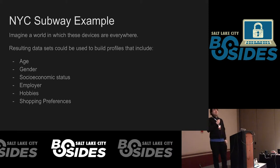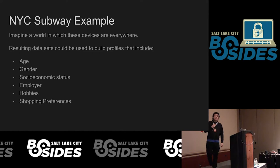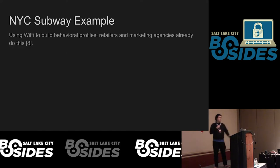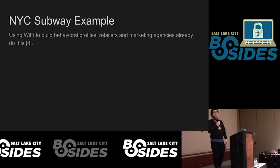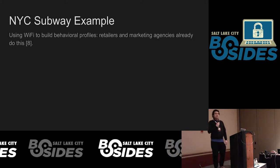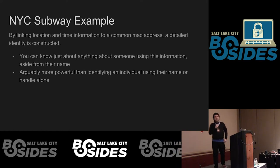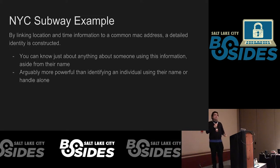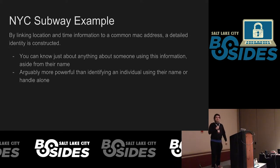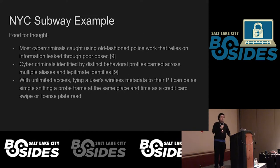Imagine a world where these devices are literally everywhere — not just the subway, but retail stores and just about everywhere. The resulting datasets could be used to build profiles that include age, gender, and socioeconomic status. You can tell a lot just by where someone goes. By linking location and time to a common MAC address, you can create a detailed identity — arguably more powerful than just knowing someone's name. You pretty much are your metadata, and your name is just a label for it.